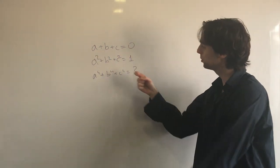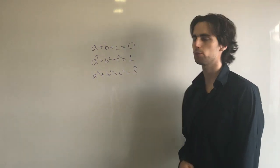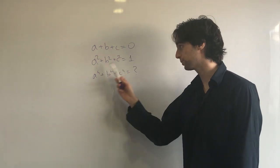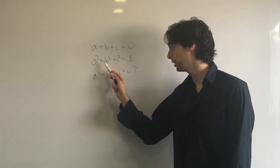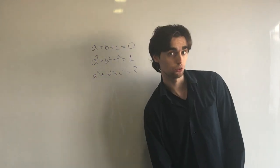Hello fellow problem solvers! We're going to be doing an algebra problem. Here's the thing: a, b, c are real numbers such that a + b + c = 0, a² + b² + c² = 1, and we need to find what a⁴ + b⁴ + c⁴ is equal to.